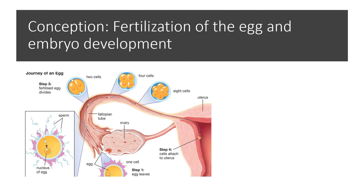If the sperm exits the penis into the vagina, conception can occur — that is, fertilization of the egg and embryo development. The first step is that the egg must be present in the fallopian tube after leaving the ovary. If the egg is present, sperm are present, and conditions are favorable, the sperm fertilizes the egg. This fertilized egg then divides until an embryo is formed, implants in the uterus, and continues to grow until pregnancy is completed.